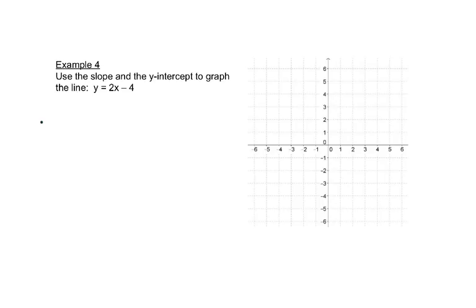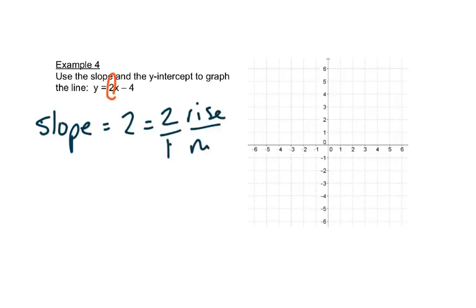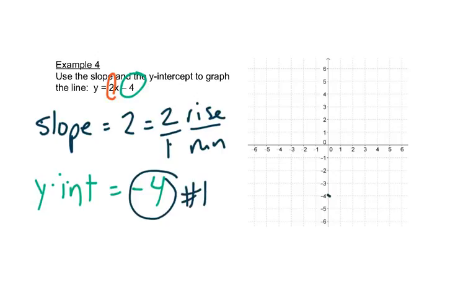So let's look at this one now. Here we can read our slope straight off of the equation. Slope is 2. We're going to write that as 2 over 1 so we can do the rise and the run. The y-intercept is negative 4. Okay? So when we graph, we start with the y-intercept. Start there and put that on the y-axis.